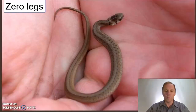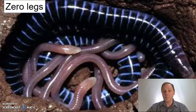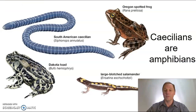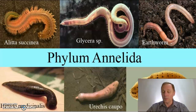All right — earthworm? Wait, this guy has bones. That is just a baby snake. Snakes are reptiles. How about these guys? No legs — these are not earthworms and they're not snakes either. These are caecilians, which are amphibians. Okay — earthworms, right? Yes, finally — these are earthworms, and they belong to their own phylum called annelida, which also includes blood-sucking leeches.